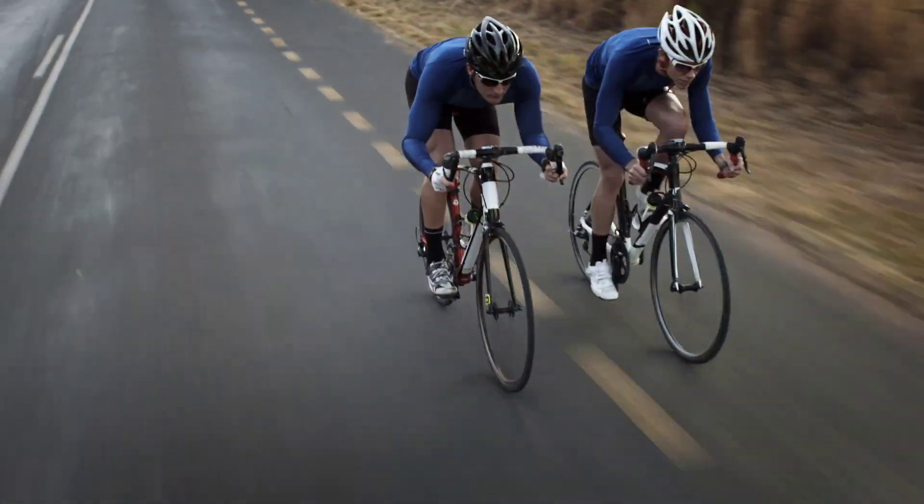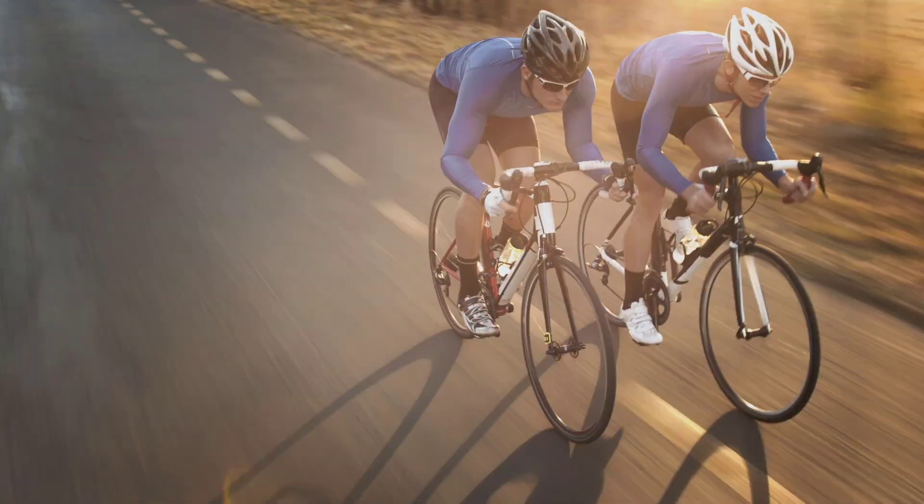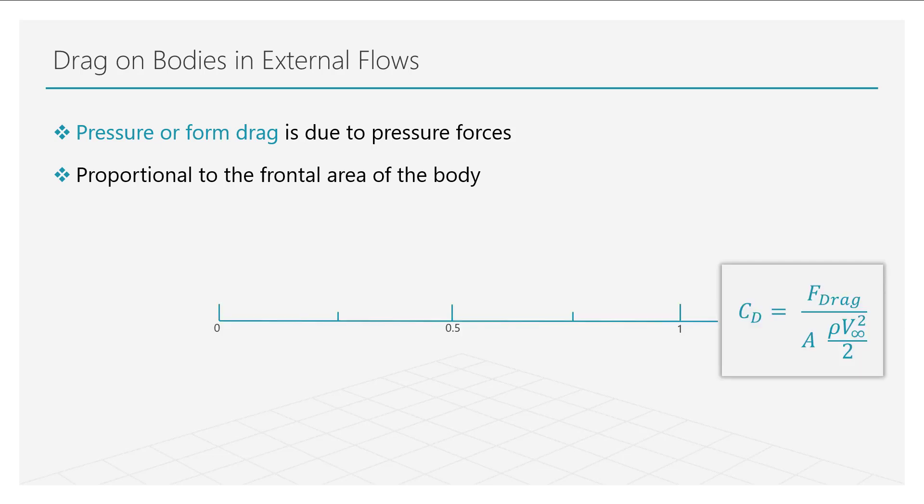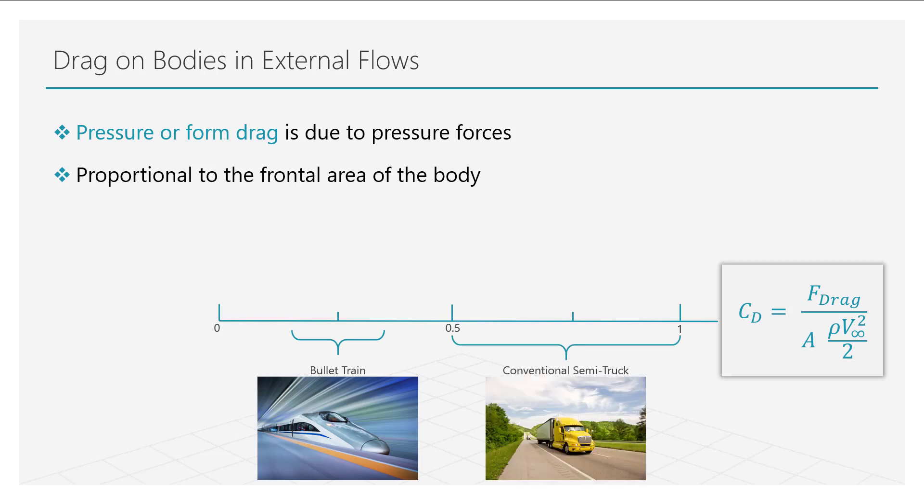Have you ever noticed a cyclist crouching down on his bike and wondered why he is doing it? Well, I am sure it is not because of the back pain. It is in fact to get into a streamlined shape so that there is lesser air resistance which can help him move faster. The air resistance the biker is trying to avoid is referred to as the pressure drag or form drag. It is proportional to the frontal area of the body, i.e. the cross sectional area. For streamlined bodies such as aircrafts and bullet trains, the pressure drag is really small when compared to bluff bodies such as semi-trucks.